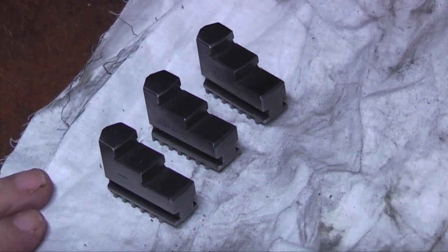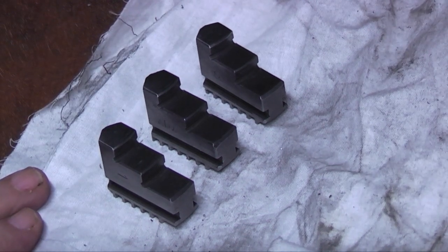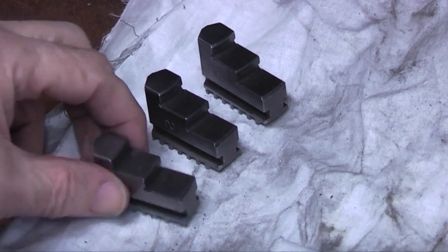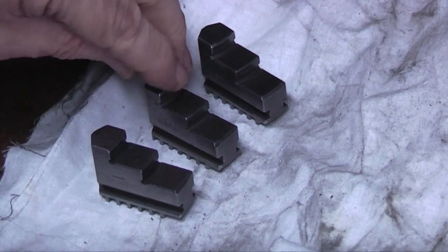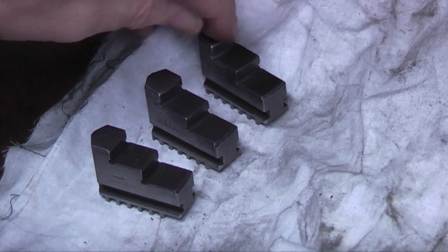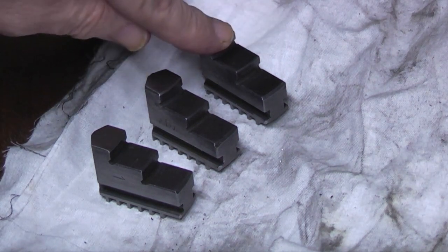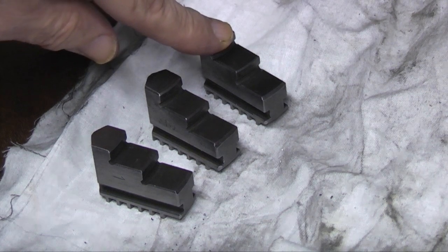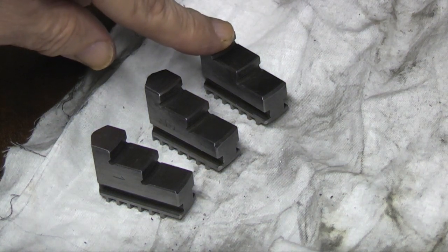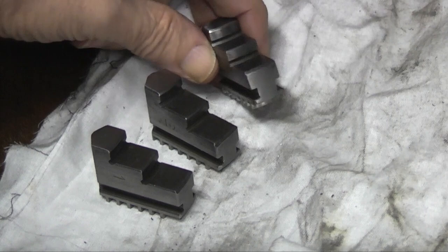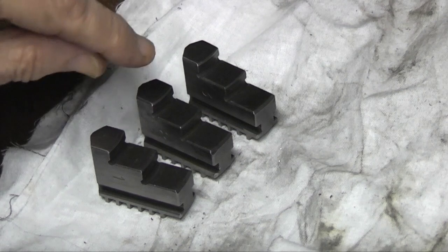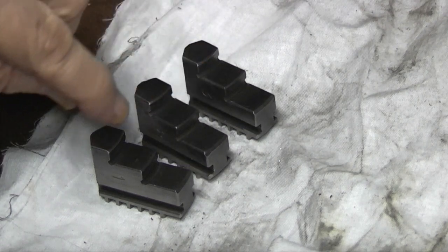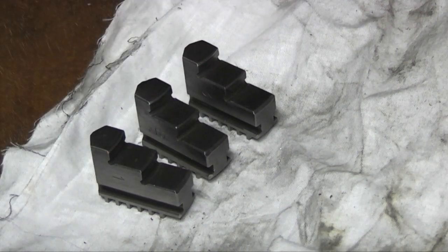To grind them on the mill, the first thing we need to do is check that the outside of the jaw on each one is not damaged, hasn't been turned down, and is as near as possible to the original condition.